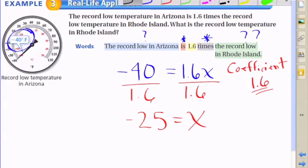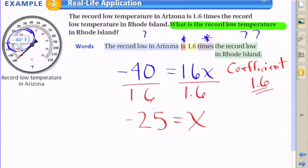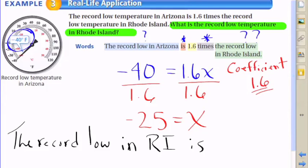That is our solution or the unknown variable. We've essentially answered the problem. Go back and look—they asked us what is the record low temperature in Rhode Island. Sometimes it's easy to forget what exactly we're trying to figure out.